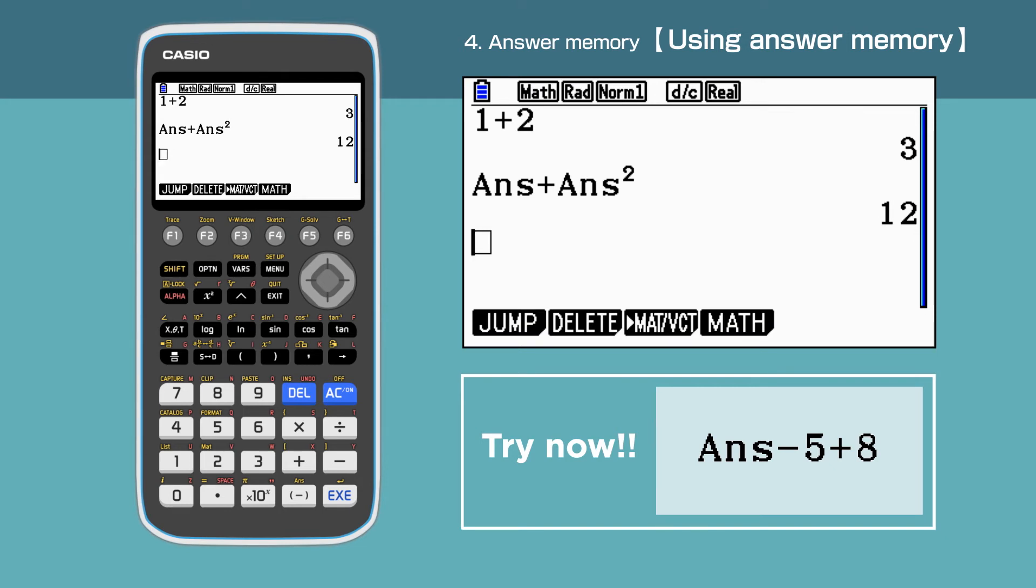Answer minus 5 plus 8. In this case, we only need to enter minus 5 plus 8 as the calculator enters the previous answer for us automatically. The answer for the question is 15.